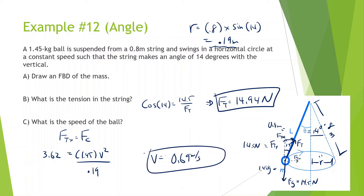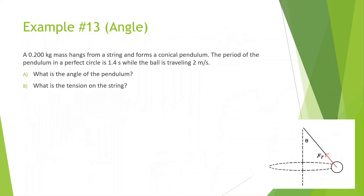We're going to be doing a few more of these, so if that didn't make sense, go back and watch what didn't make sense. Moving on: a 0.2 kilogram mass hangs from a string and forms a conical pendulum. The period of the pendulum in a perfect circle is 1.4 seconds while the ball is traveling 2 meters per second. What is the angle?